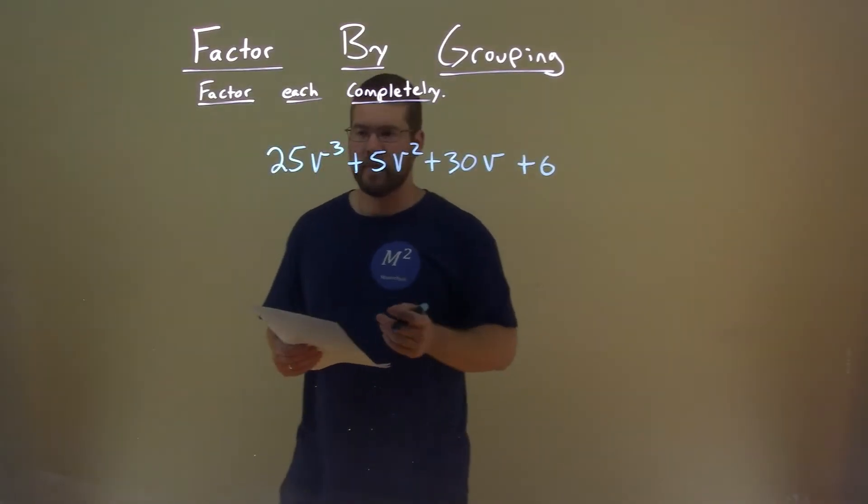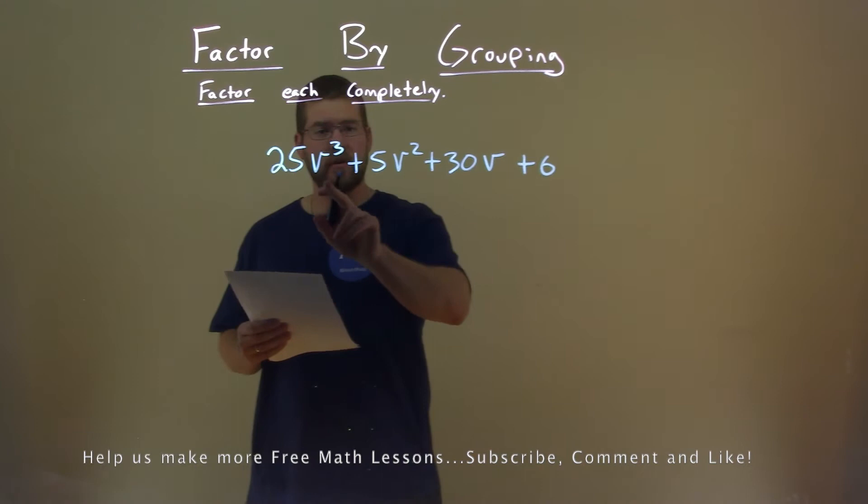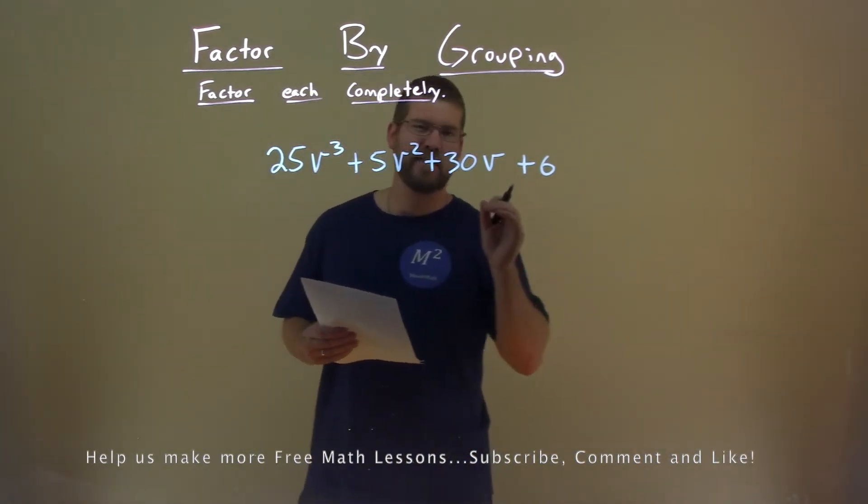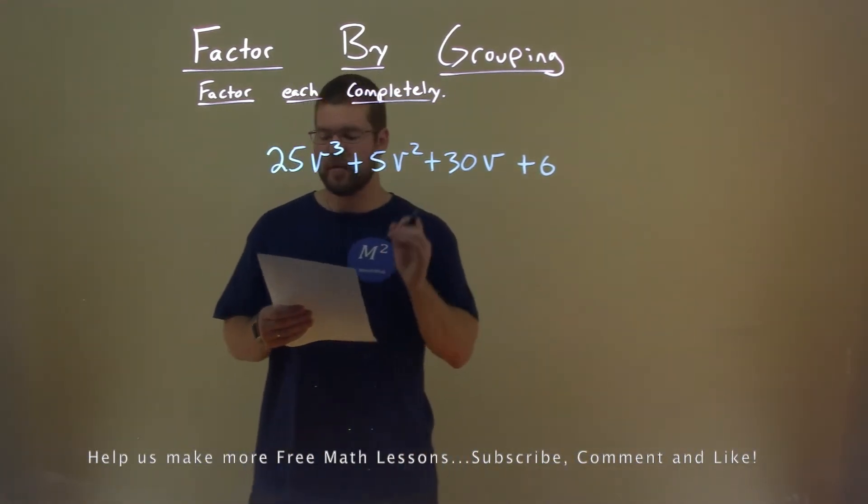We're given this problem right here. 25v to the third power plus 5v squared plus 30v plus 6, and we want to factor this completely.